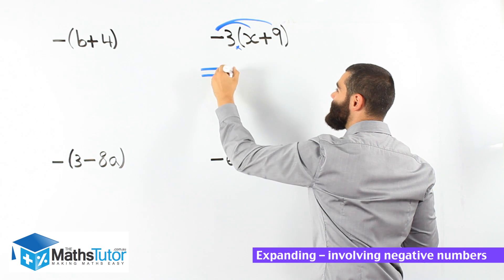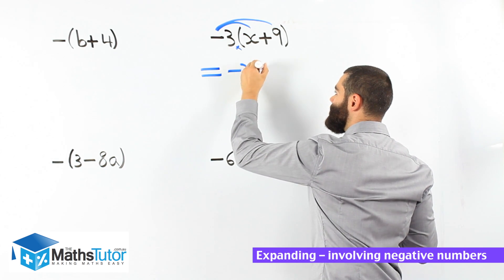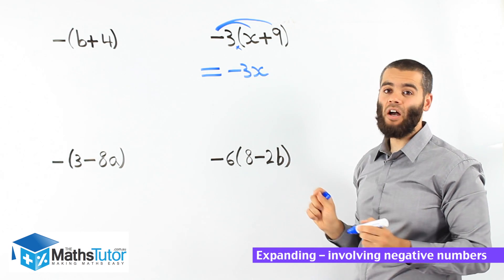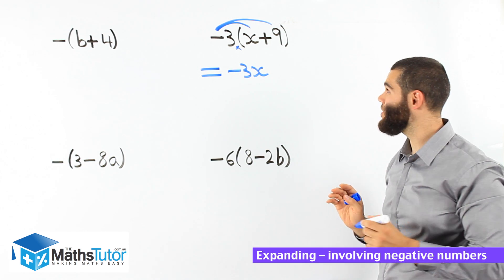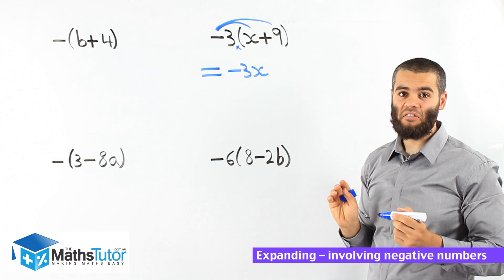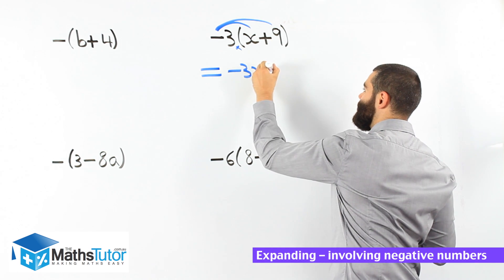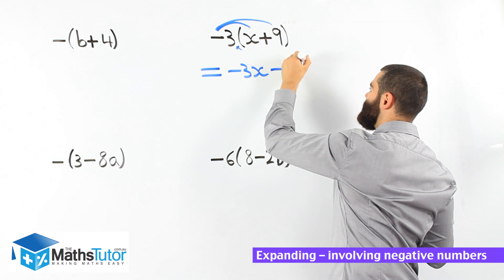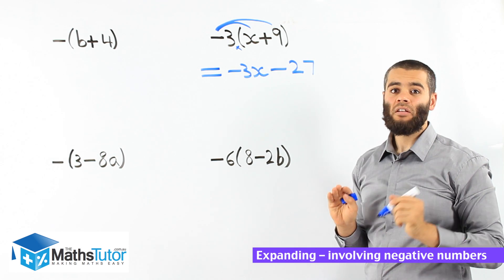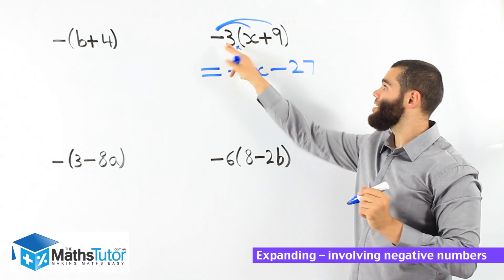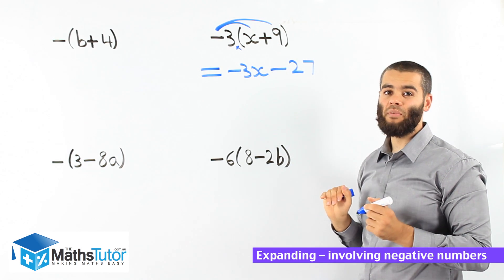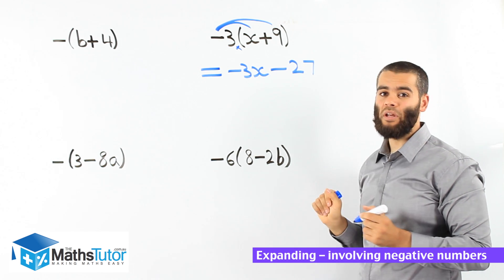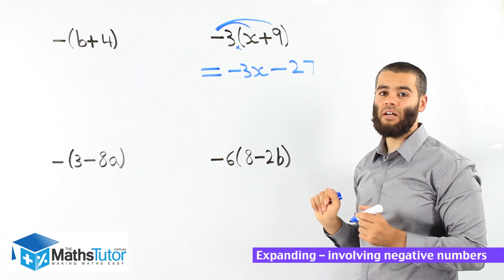Negative 3 times x gives negative 3x. Then negative 3 times positive 9 — we know that 3 times 9 is 27. And negative times a positive, the negative will win. Negative times positive is negative, so negative 3 times positive 9 is negative 27. That's our final answer for that question.